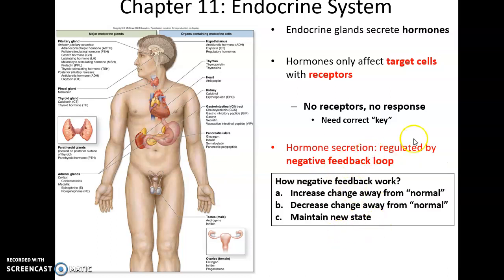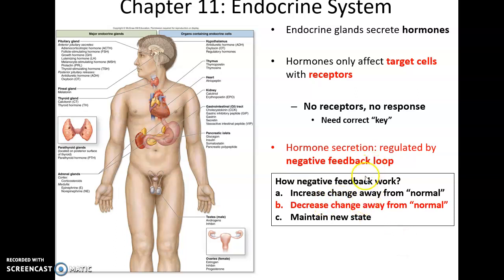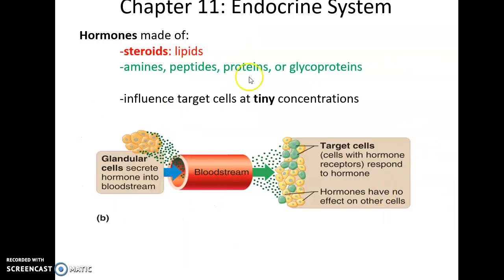Hormone secretion is regulated primarily by a negative feedback loop, which means a decreased change away from normal. So as something gets too far from normal, negative feedback will cause it to return to normal.